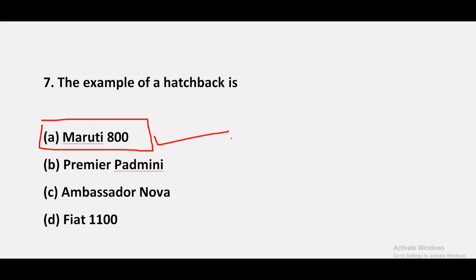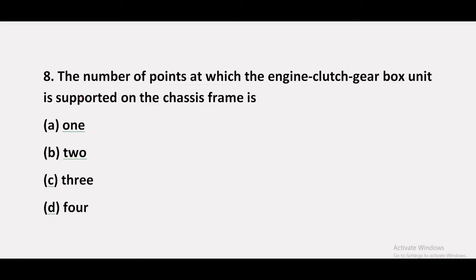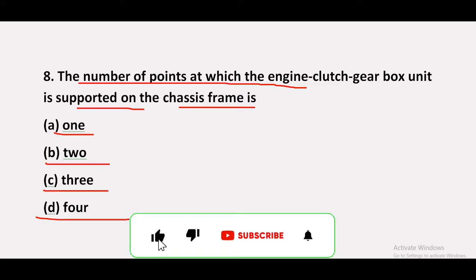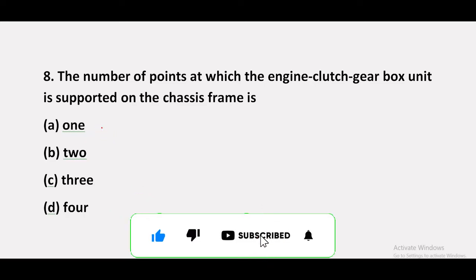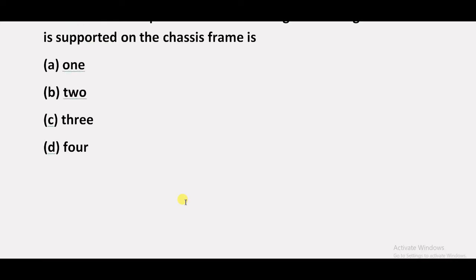Question 8: The number of points at which the engine, clutch, and gearbox unit is supported on the chassis frame is — option A: 1, option B: 2, option C: 3, option D: 4. The answer is 3 — the engine clutch gearbox unit is supported on the chassis frame at 3 points, which are the 3 mountings in the car.